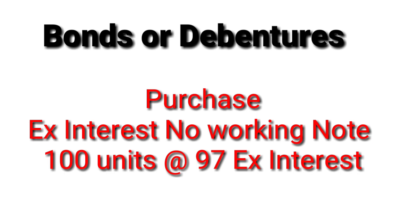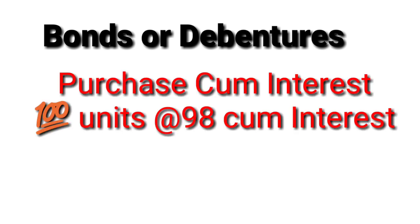For ex-interest purchase: if 100 units are purchased at a rate of 97 ex-interest, you simply multiply 100 × 97 to get the cost of 9,700. That direct value is your cost. Remember, the face value — also called nominal value — of bonds and debentures is always 100, so 100 × 100 gives face value, and 100 × 97 gives cost. There is no working note required for an ex-interest purchase.